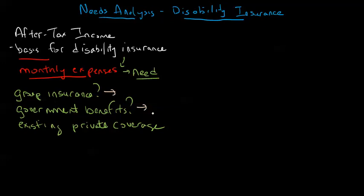Government benefits are going to be a little bit stickier. Workers' compensation tends to provide a fairly generous disability benefit where it applies. EI is very short-term, and Canada Pension Plan is very difficult to qualify for. Any existing private coverage is usually going to be dealt with through issue and participation limits, although there are some exceptions to that.